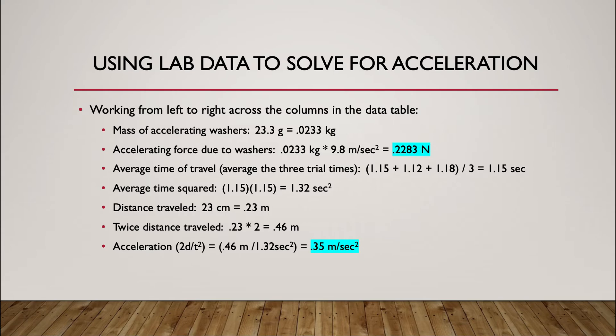And then the acceleration, 2d over t squared. Well, we've got 2d, which is 0.46, we've got t squared. So we're just going to divide those two numbers, and then we have 0.35 meters per second. Again, your numbers will be different, so don't expect yours to match mine. But I highlighted that because acceleration is the other important number we want.